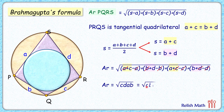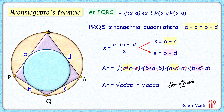Rearranging, we get area = √(abcd), and that's what we had to prove — hence proved. I hope you enjoyed the video. I will see you in the next video, till then tata bye bye.